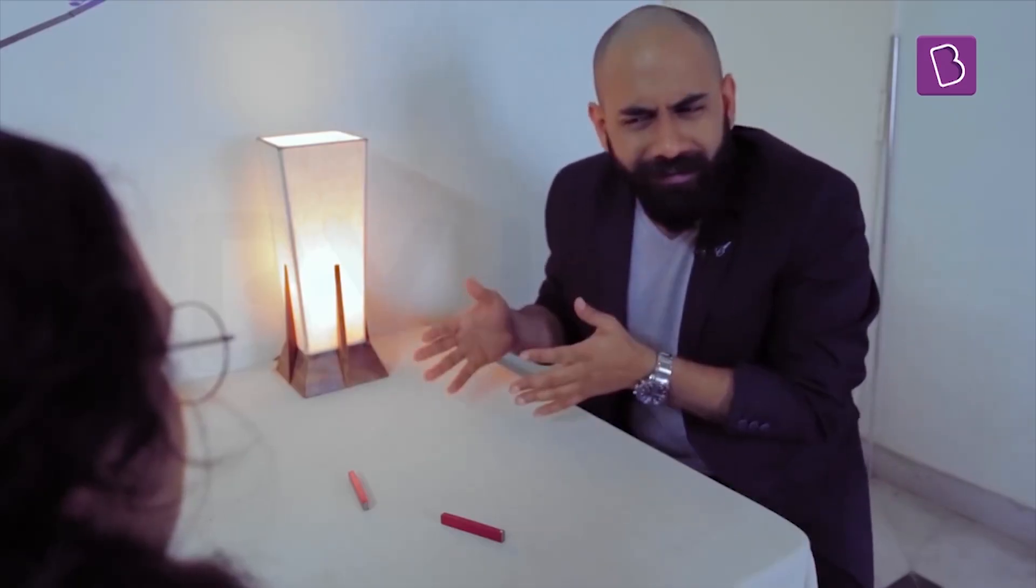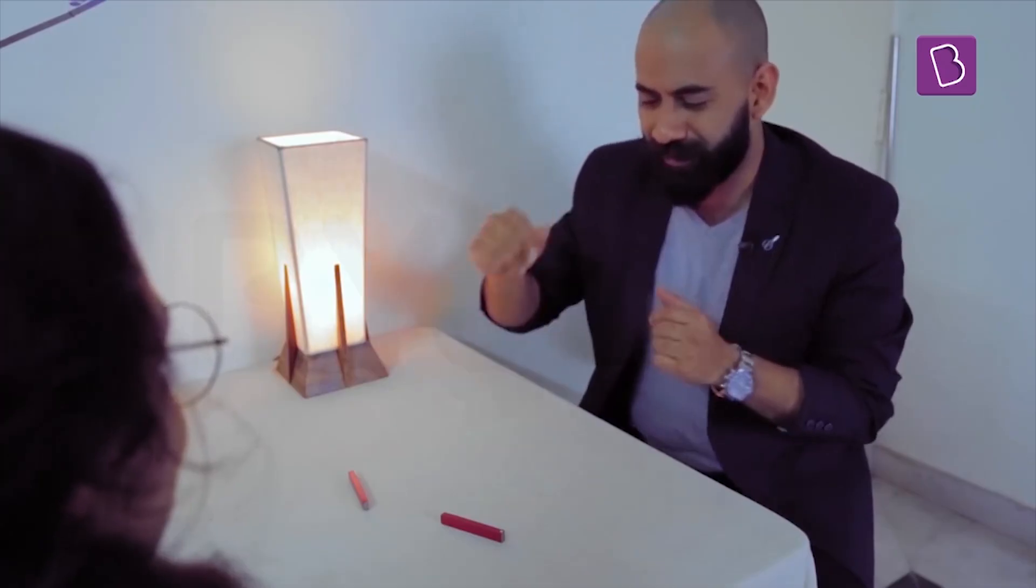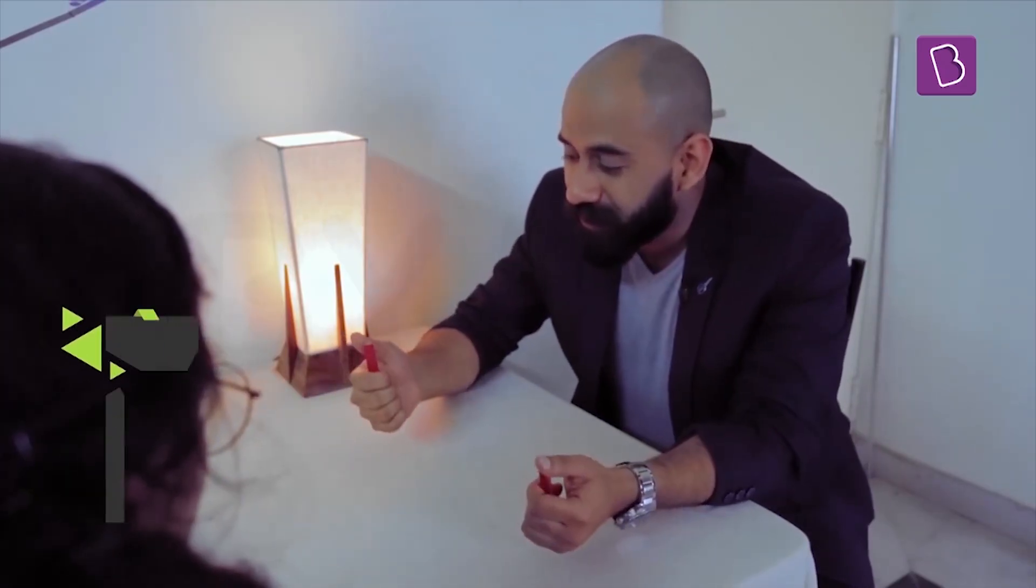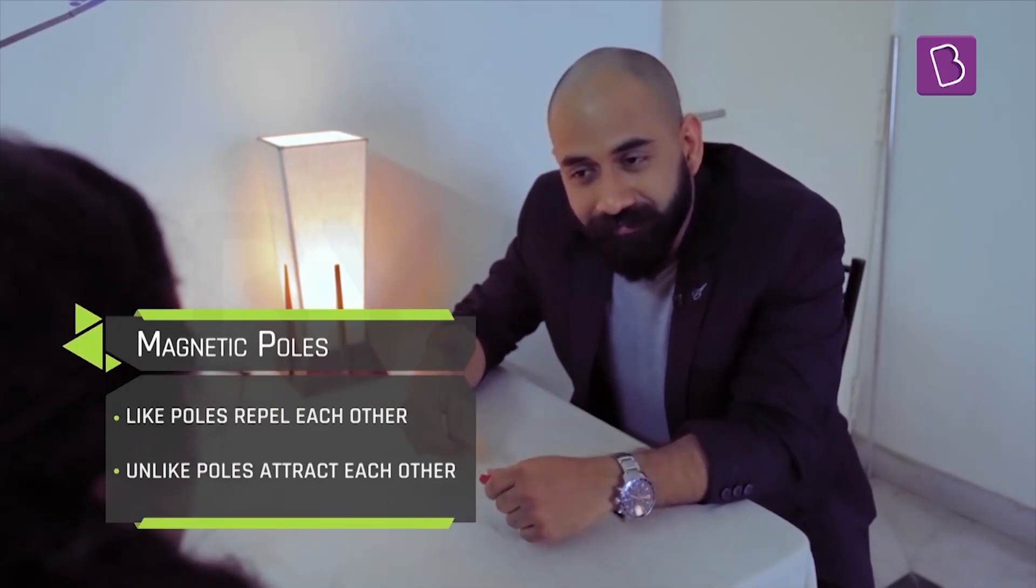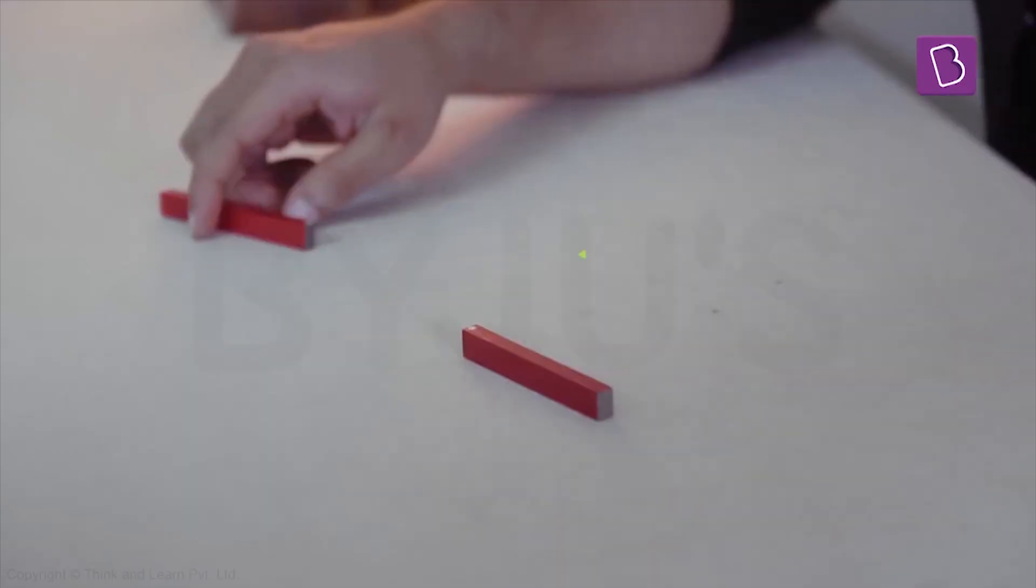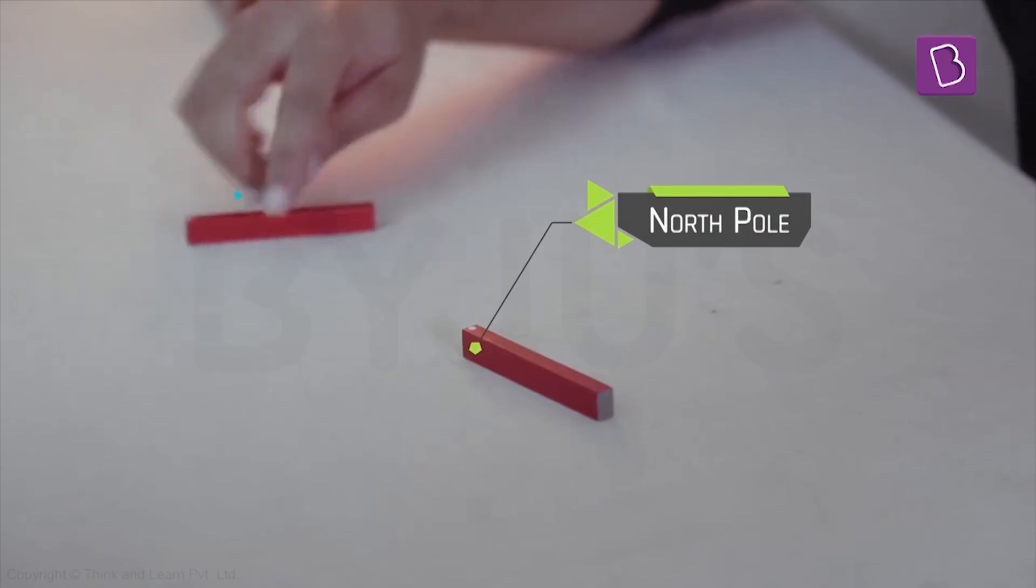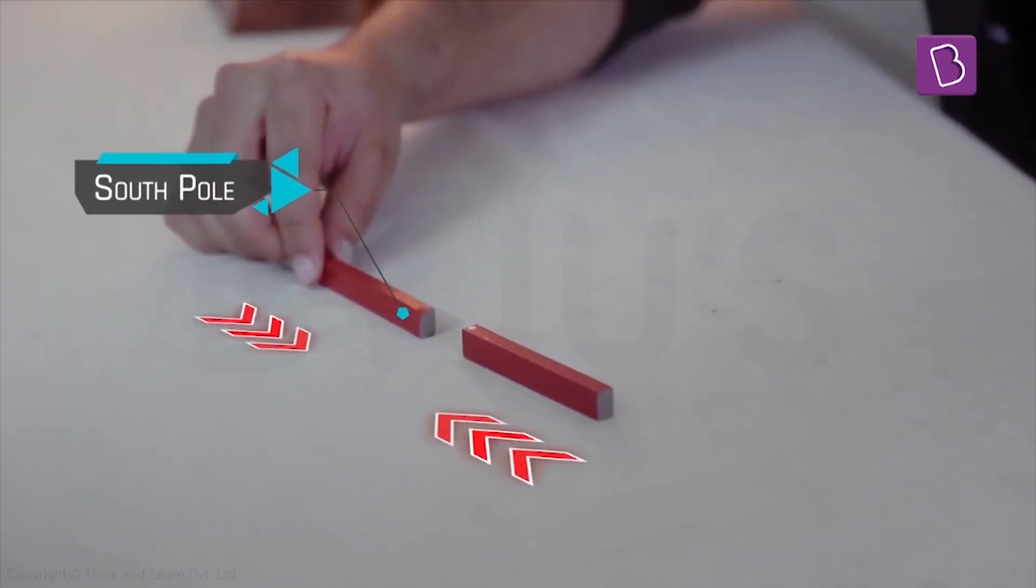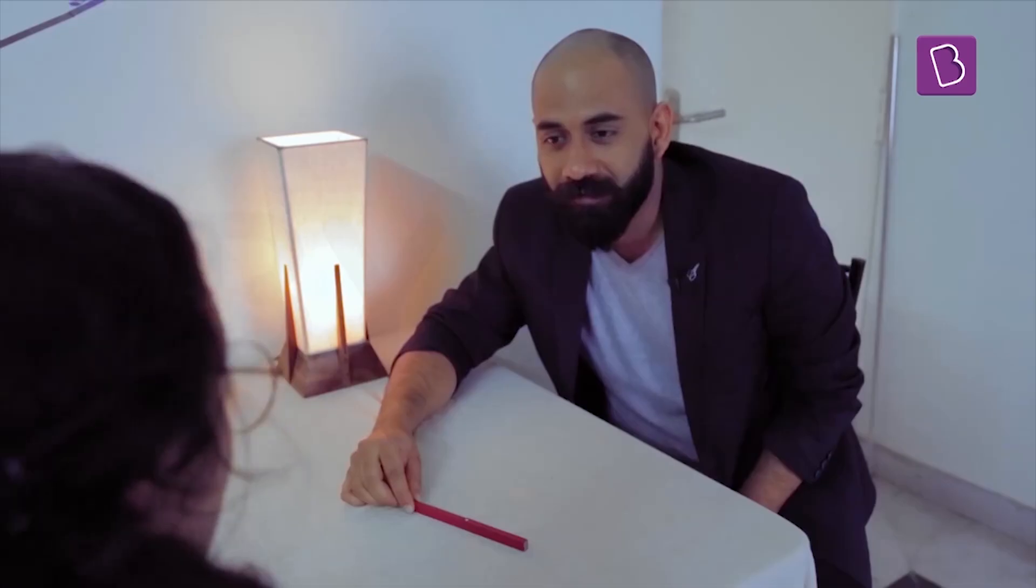Now when you take two magnets, that's when it becomes fun. For example, what happens is the like poles, they repel each other and unlike poles attract. See here for example. So this is the north pole and I have a south pole over here. Look at what happens. You see that?